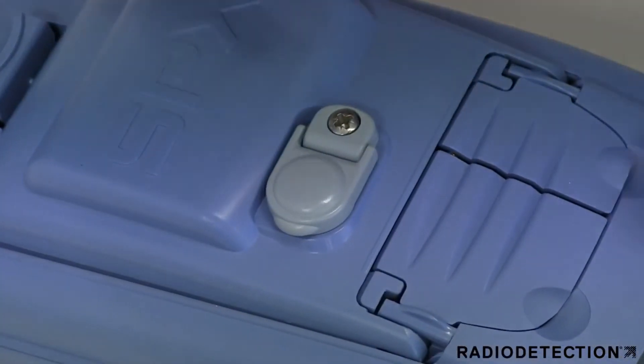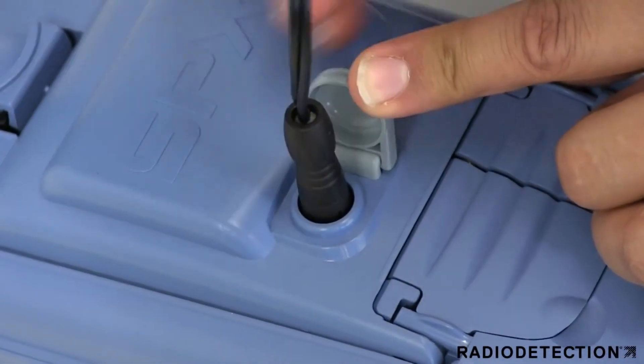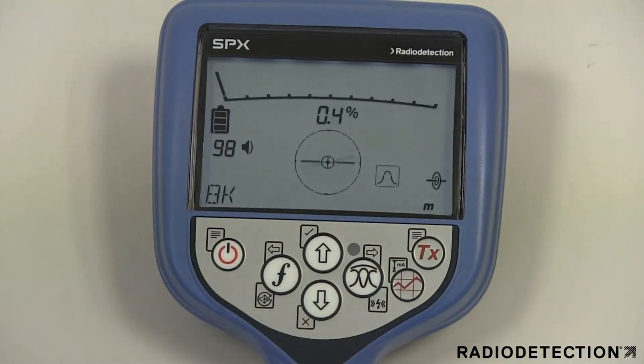To recharge the locator battery pack, connect the battery charger to the DC input socket on the front of the battery pack. You can then turn the locator on using the power button.